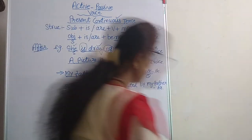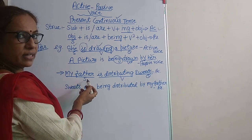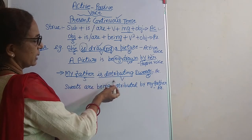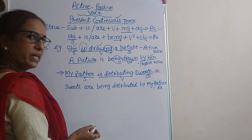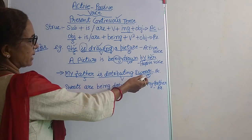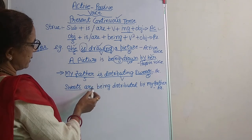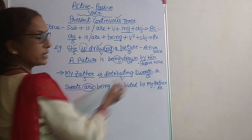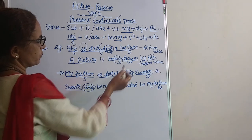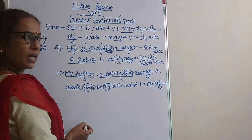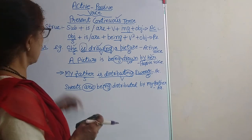The second sentence: 'My father is distributing sweets.' My father is the subject; he is distributing — the distribution task is continued; and 'sweets' is the object. Now, as per the passive construction, the object 'sweets' becomes the subject. Sweets is plural, so we use 'are' not 'is.' The 'ing' of 'distribute' is taken with 'being.' So: 'Sweets are being distributed by my father.' This is the passive construction in an affirmative sentence.